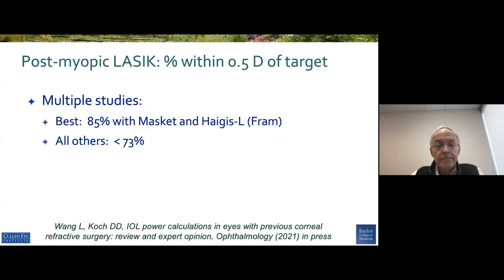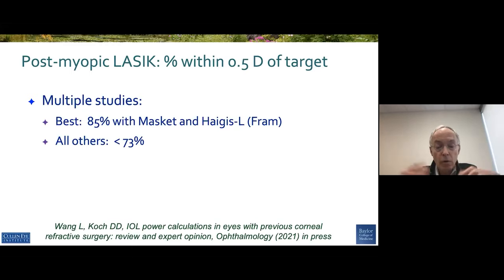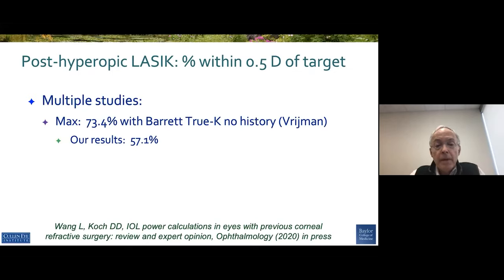What about the post-LASIK eye? Multiple studies have been done. The best data I've seen is one paper from Sam Maskett and Nicole Fram with the Haigis-L and the Maskett formula, with 85% within a half diopter. But if you look at the literature, almost all of the other reports are 75% or less. For hyperopic LASIK, the best data I've seen were from a group in the Netherlands — 73% with the Barrett True-K, no history. Our results in post-hyperopic LASIK eyes were a very disappointing 57%.